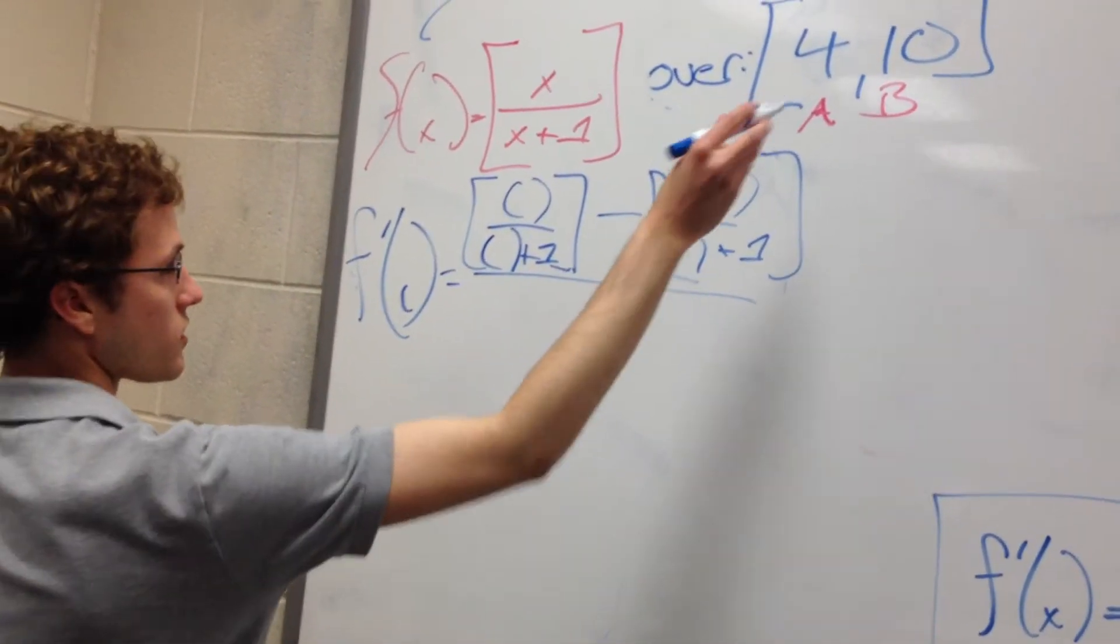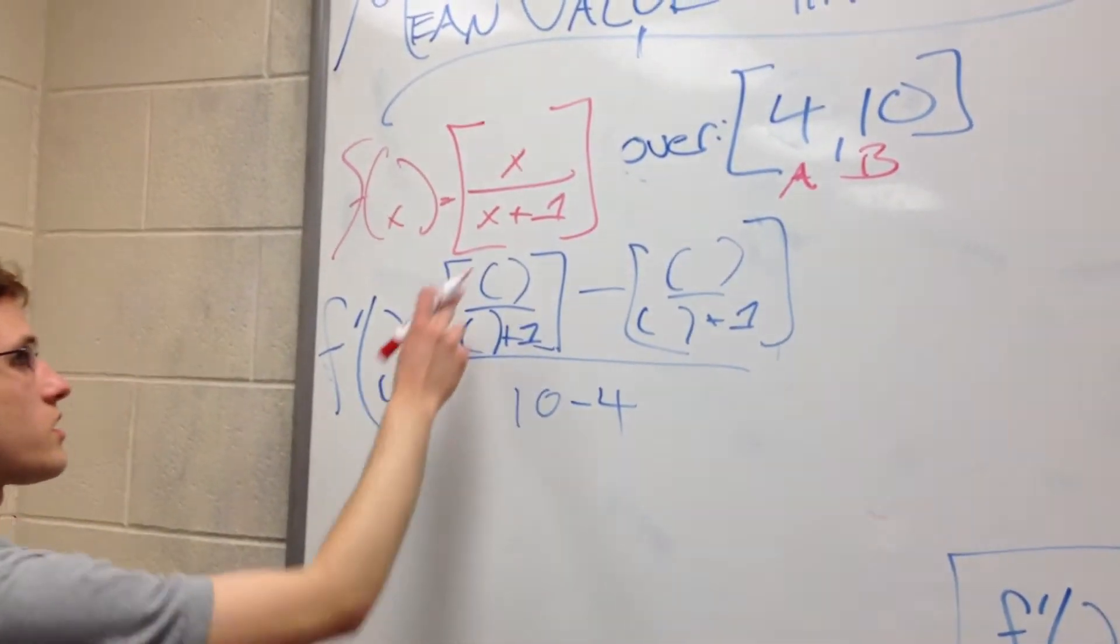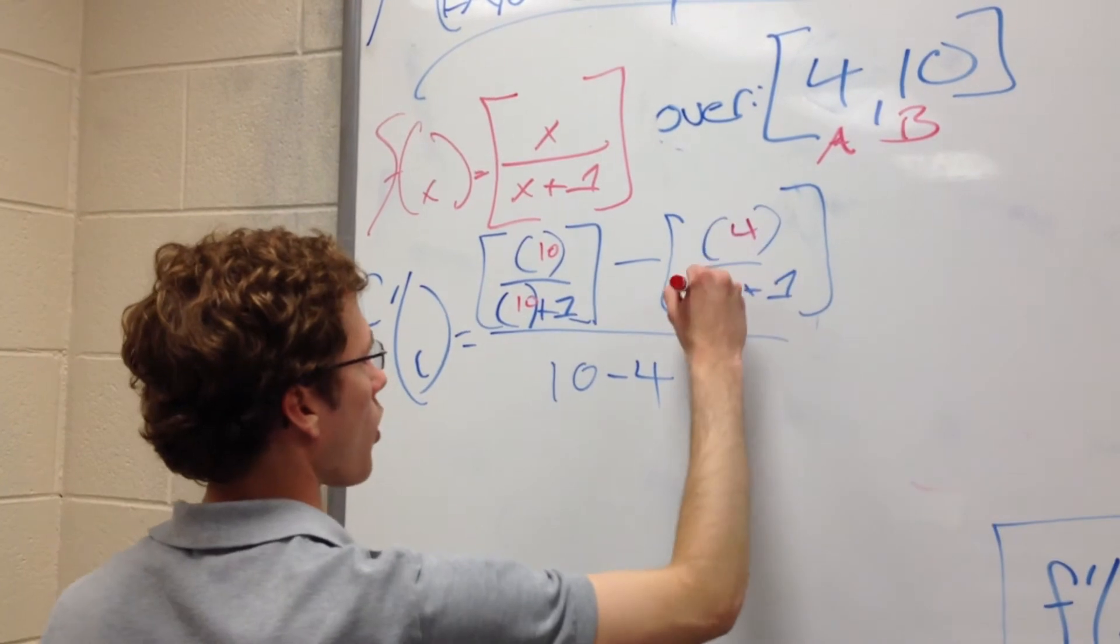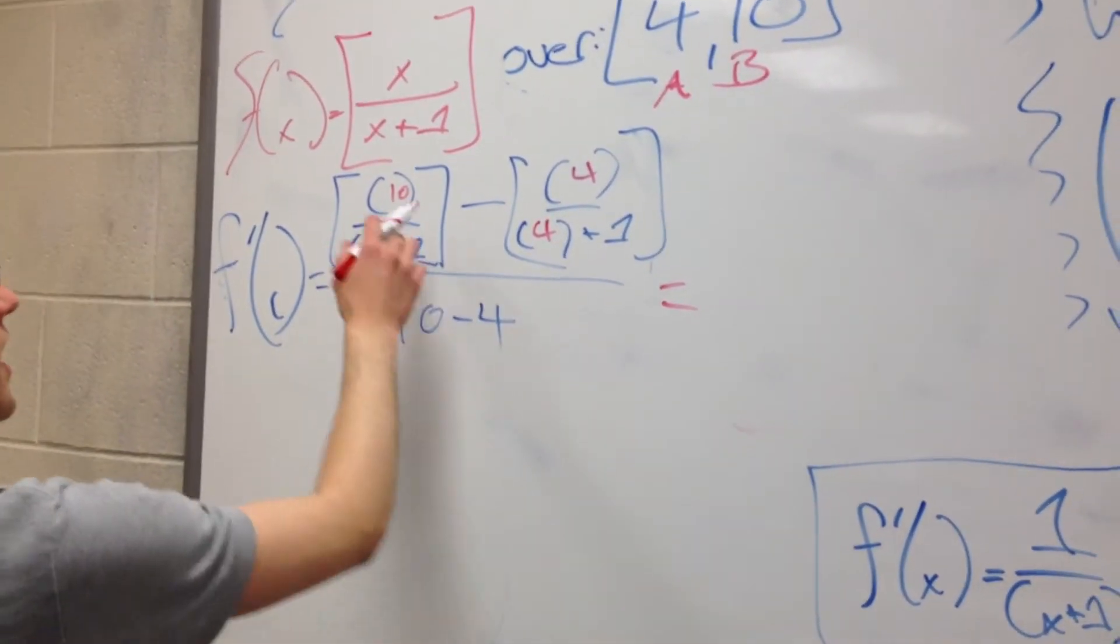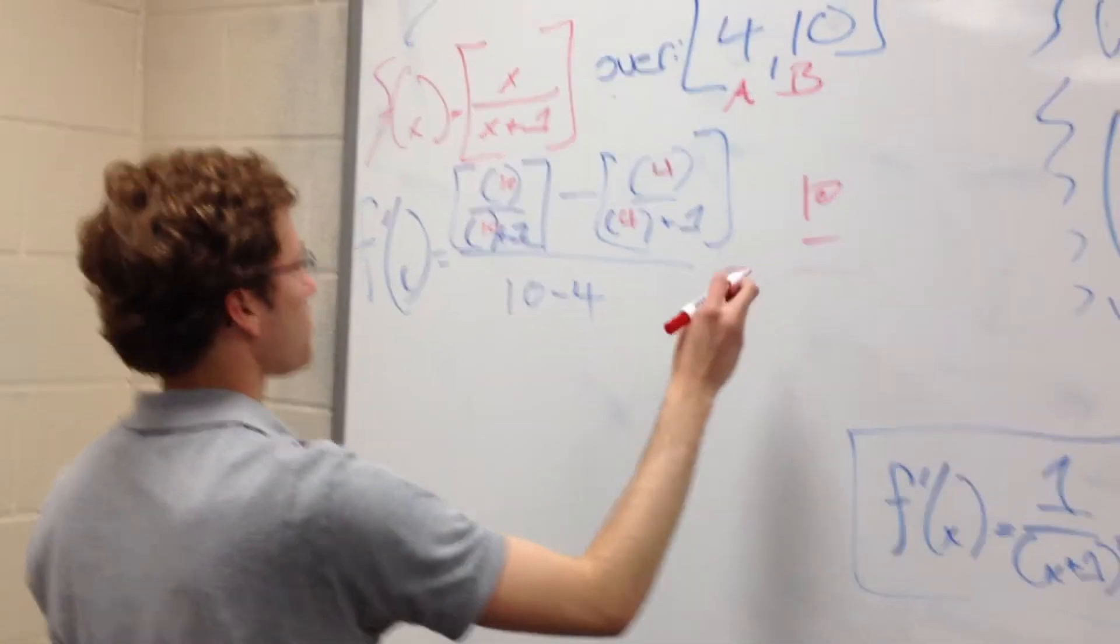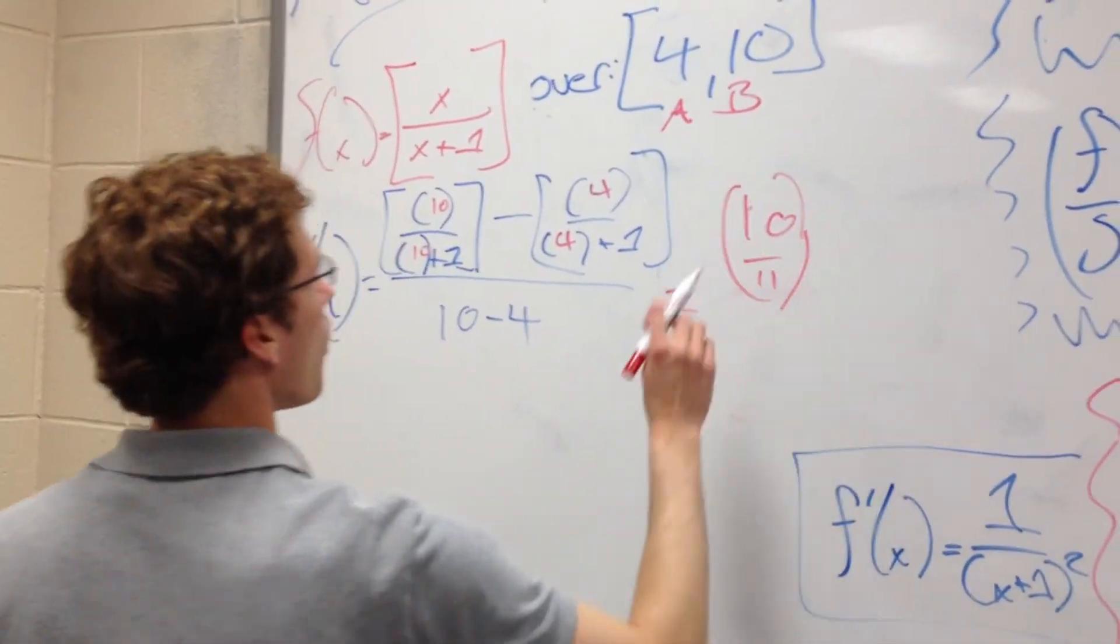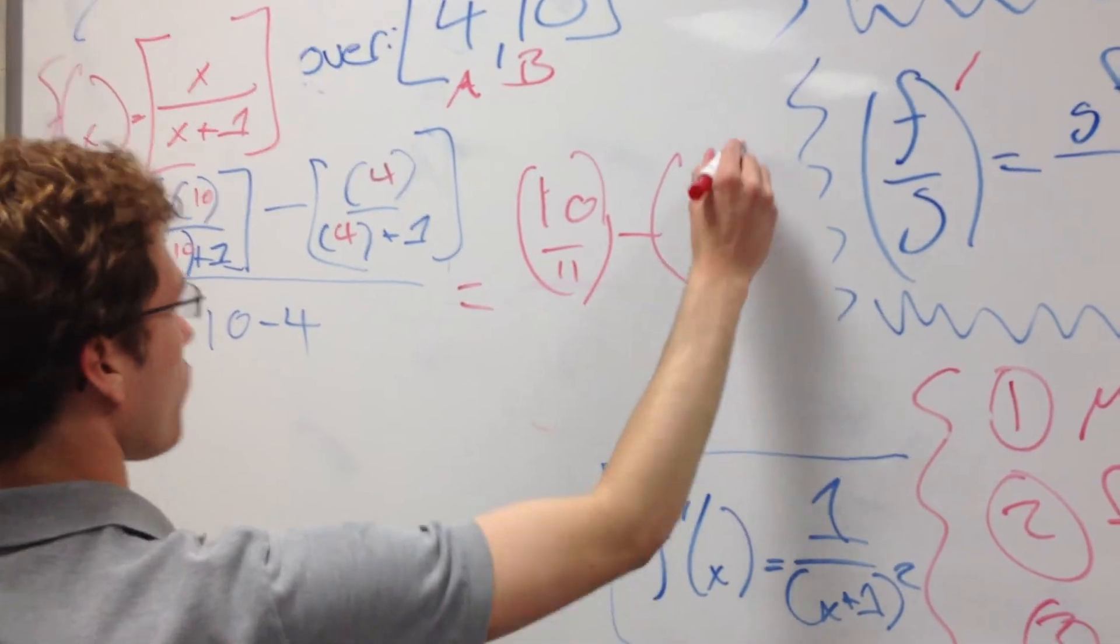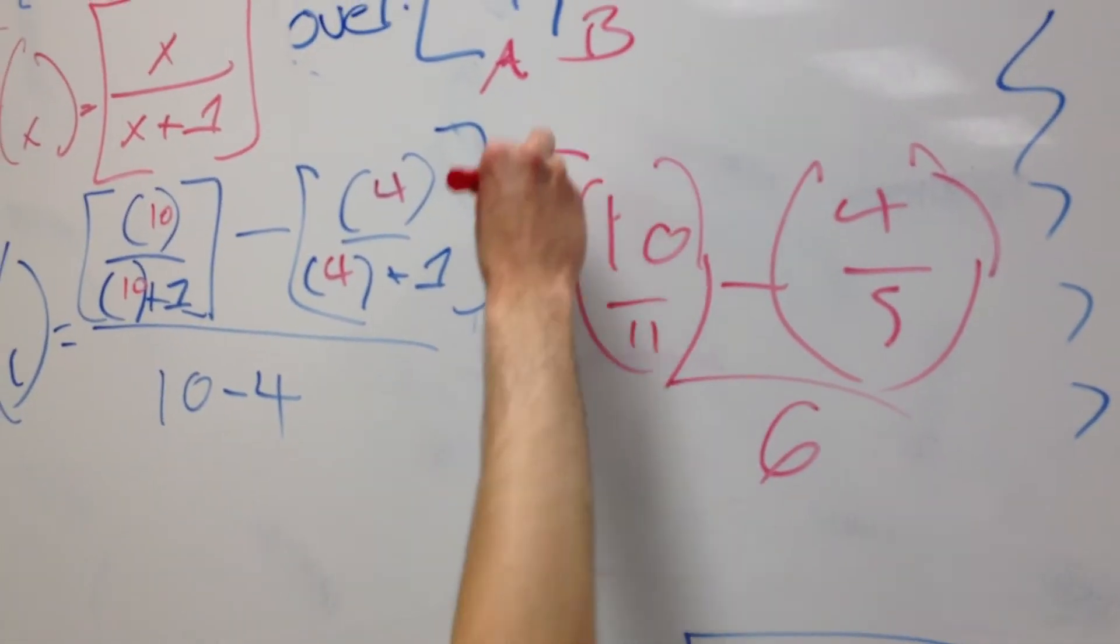And then b minus a, which is just 10 minus 4. So, let's go ahead and write in our b's and a's here. This is all b's. This is 10. 10. This is a. This is 4. 4. All right. Now, we're doing just some more simple arithmetic here. 10 over 10 plus 1. So, 10 over 11. Let's make that look like an actual 10. 10 over 11 minus 4 over 5. 4 over 4 plus 1 over 10 minus 4, which is just 6. All right.